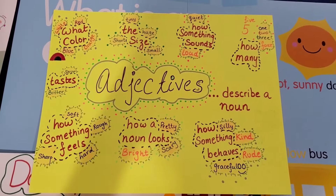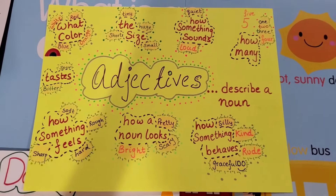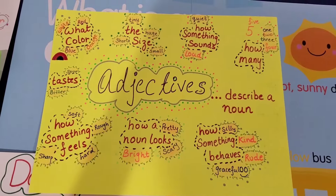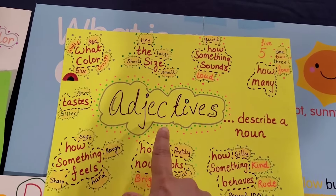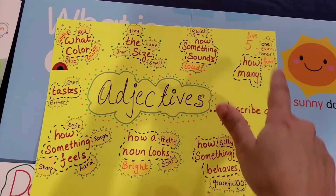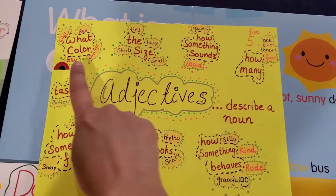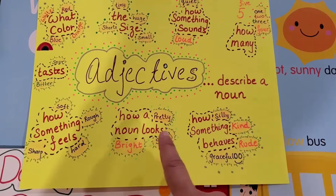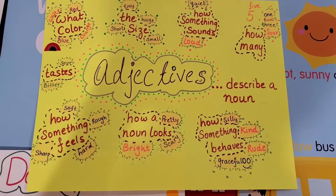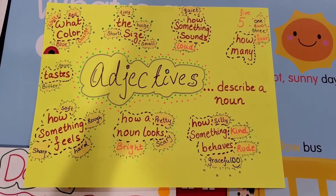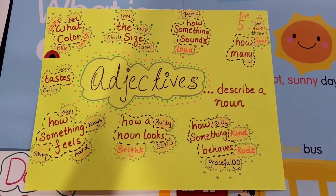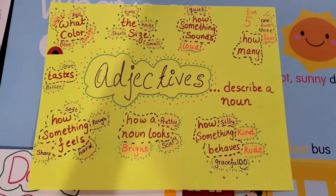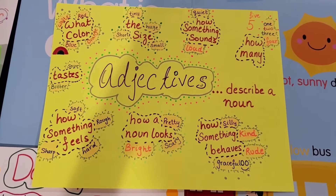I've made this first anchor chart which says 'Adjectives — describing nouns.' By now your child needs to know what nouns are — a name, place, animal, or thing. I'll link my noun video here. The chart gives a lot of open points to discuss: what color, the size, how something sounds, how many, how someone or something behaves, how a noun looks, and how something or someone feels and tastes. There are so many open portals to explore and discuss with your child.